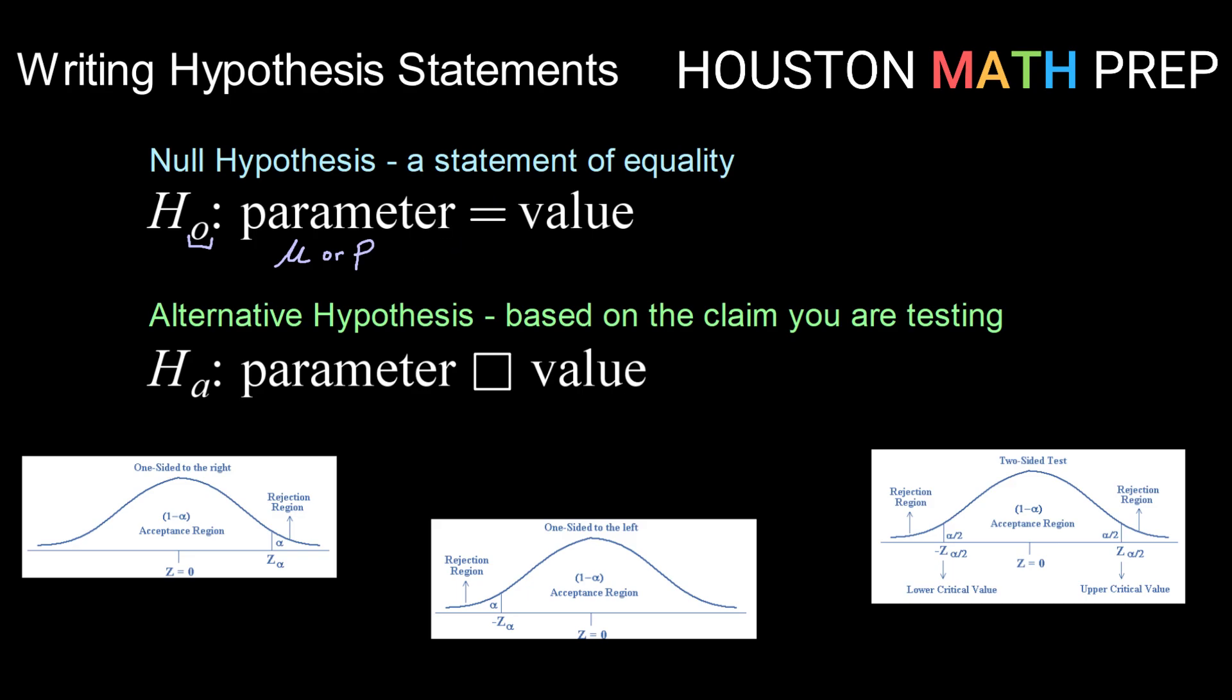Then we will write what we call an alternative hypothesis. That will be labeled as H sub a for alternative. And this one is usually based on the claim that you are testing. So there's three ways that this can look. We can have parameter and value, and then we can have the parameter is greater than the value. If that's the case, then we are looking at a one-sided hypothesis test to the right.